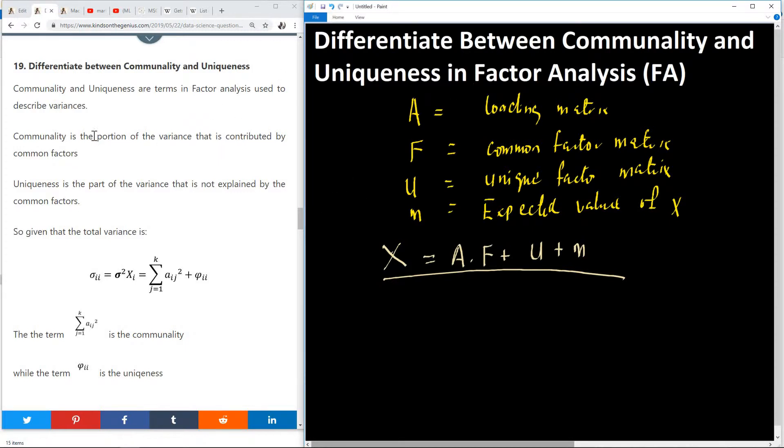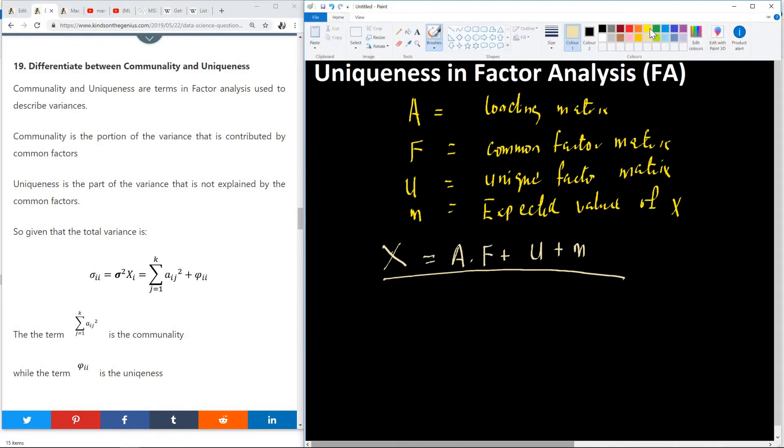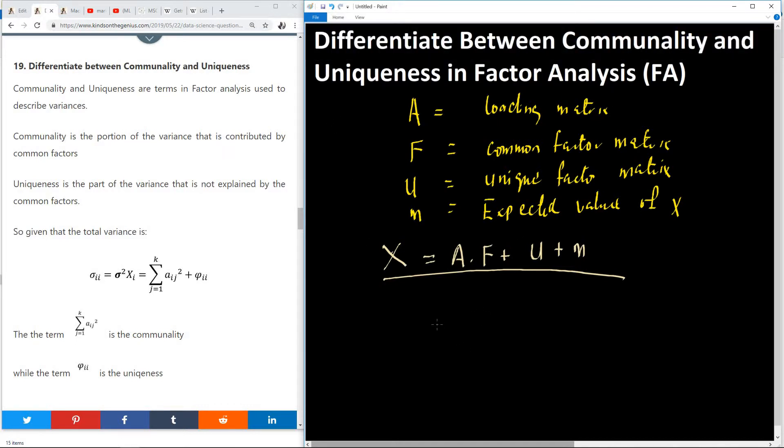Let me read out the explanation. Communality and uniqueness are terms in factor analysis used to describe variants. Communality is a portion of the variance that is contributed by common factors. Uniqueness is the part of the variance that is not explained by the common factors. If we have the total variance in our data, I'm going to use another color.